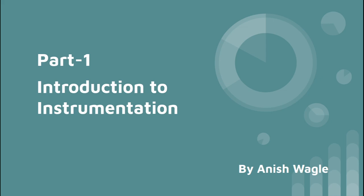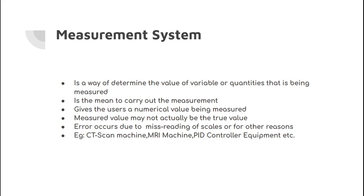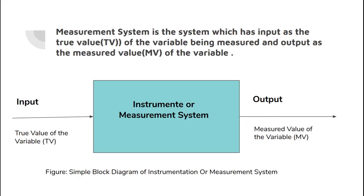So what is an instrumentation system? An instrumentation system is nothing but just a measurement system — that means it is a way of determining the value of a variable or a quantity that is being measured. It is the means of carrying out the measurement and it gives a numerical value of the measurement. Examples of an instrumentation system include CT scanning machines, MRI machines, PID controller equipment, etc.